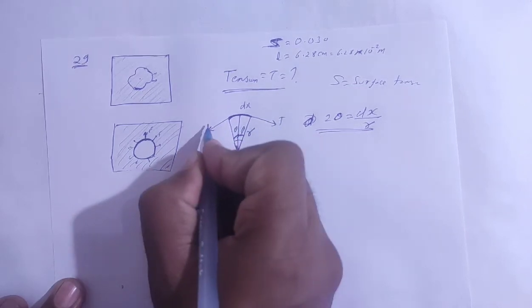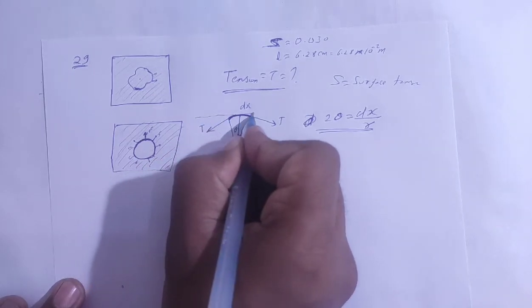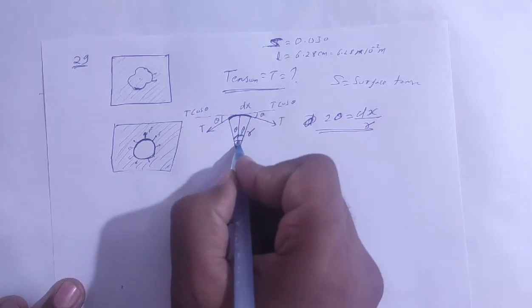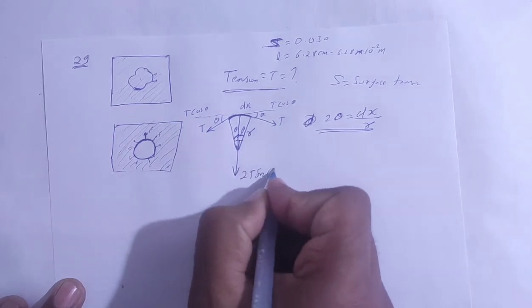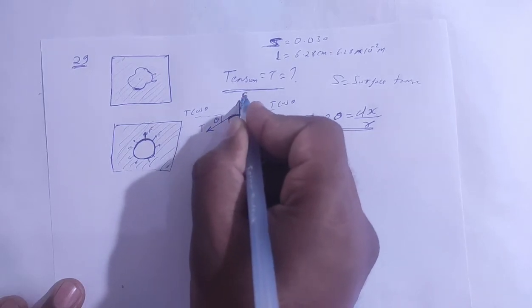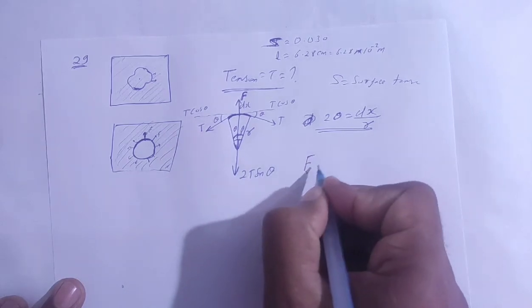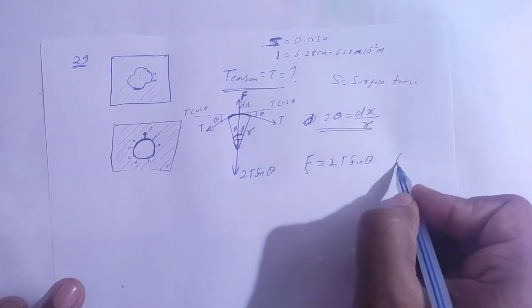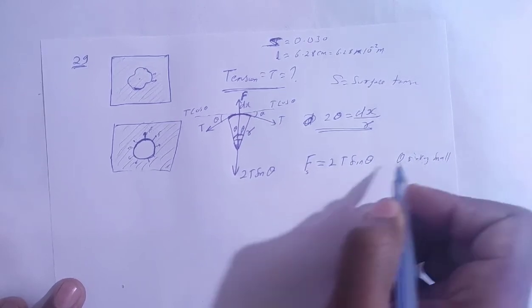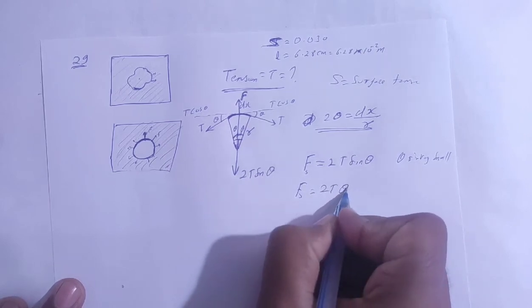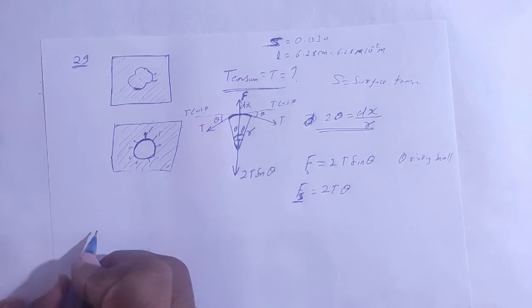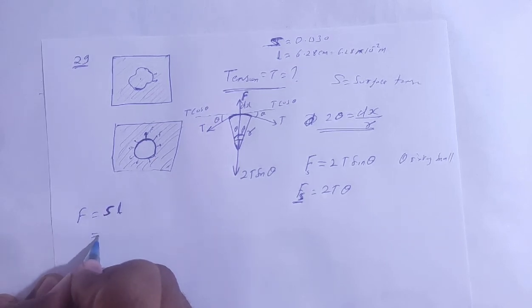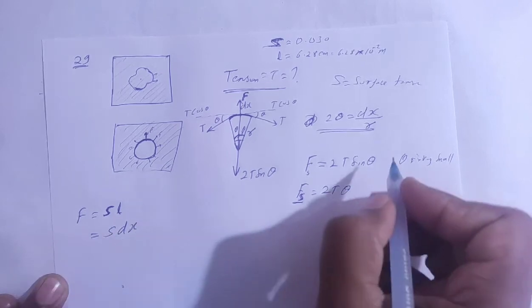Now, this thread is under tension tangentially. If I consider the tension T, I take two components: the horizontal components are T cosθ and T cosθ, and both of these cancel out. In the radial direction, we get 2T sinθ. Since θ is very small, sinθ ≈ θ, so the radial force is 2Tθ. The surface tension force equals surface tension S into length, and the length is dx.